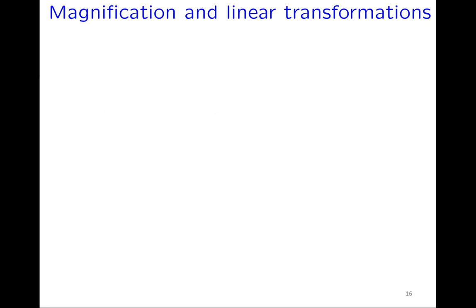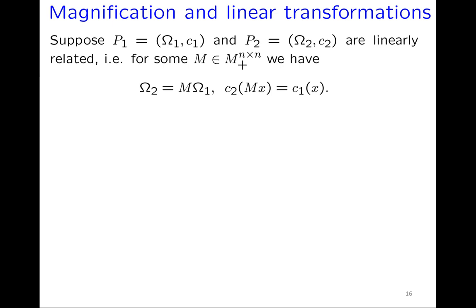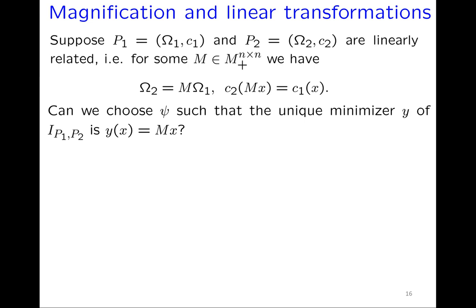Now the real point of the talk: magnification and linear transformations. Suppose the two images are linearly related, so for some matrix M, Ω₂ = MΩ₁ and c₂(Mx) = c₁(x). The question is: can we choose φ so that the unique minimizer of the energy is the linear map y(x) = Mx?